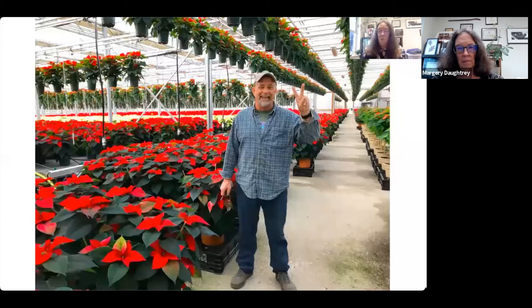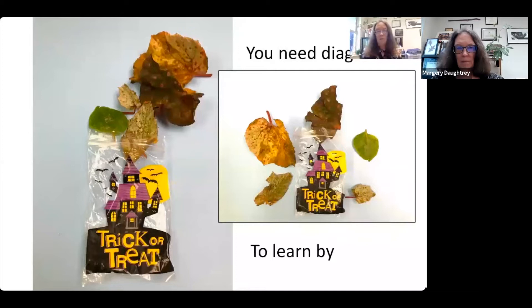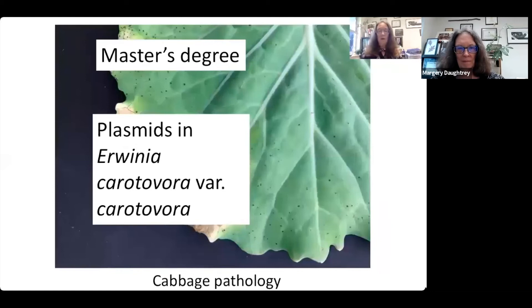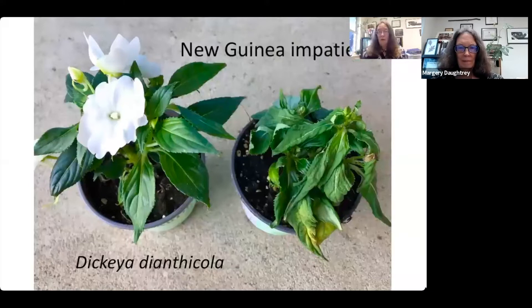I also think you need diagnosis to learn by. I've done a great deal of diagnosis over the years and find I'm learning something, if not every day, at least every week, just from constant exposure to questions of 'what's going on with my plant?' My master's was not done with ornamental plants at all — the lab focused on Erwinia carotovora variety carotovora, and I was looking at plasmids in that bacterium under Mark Mount. Later I found that soft rot also affects ornamentals, including poinsettias.